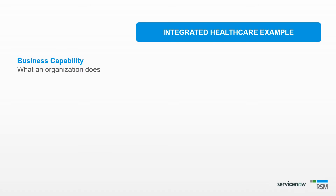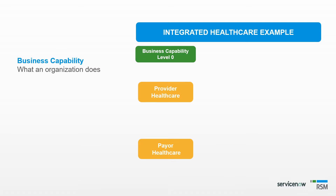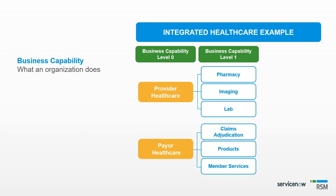Here is a small subset example of a business capability model for an integrated healthcare organization. At Level 0, we can see that we have two capabilities: Provider Healthcare and Payer Healthcare. Going on to the next level down, Level 1, we see Pharmacy, Imaging, and Lab linked to Provider Healthcare, and Claims Adjudication, Products, and Member Services for Payer Healthcare.